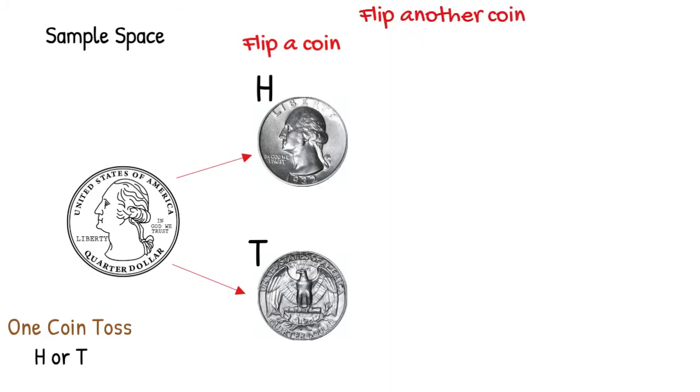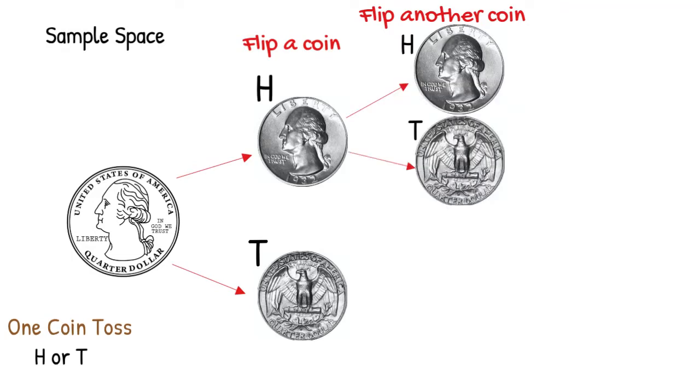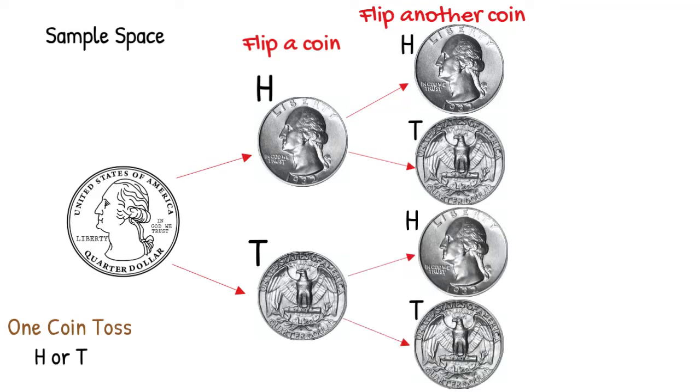Let's say we flip another coin. If we first got heads, our next flip can give us heads or tails. And if we first got tails, our next flip can give us heads or tails.